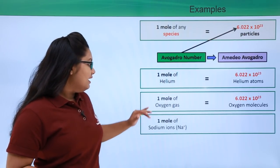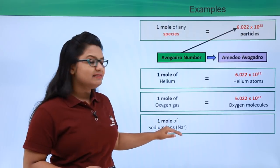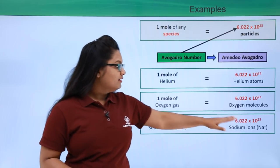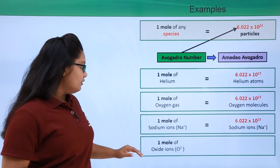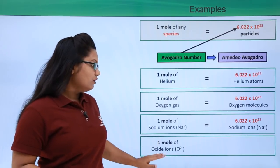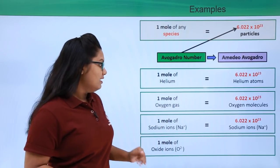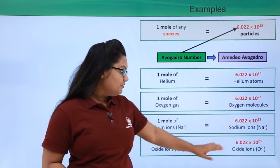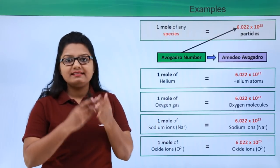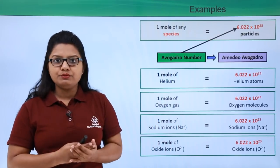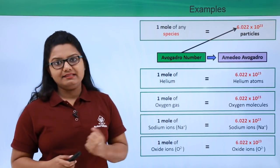In the same way, if we have one mole of sodium ions, it means we have Avogadro's number of sodium ions — that is, 6.022 × 10²³ sodium ions.